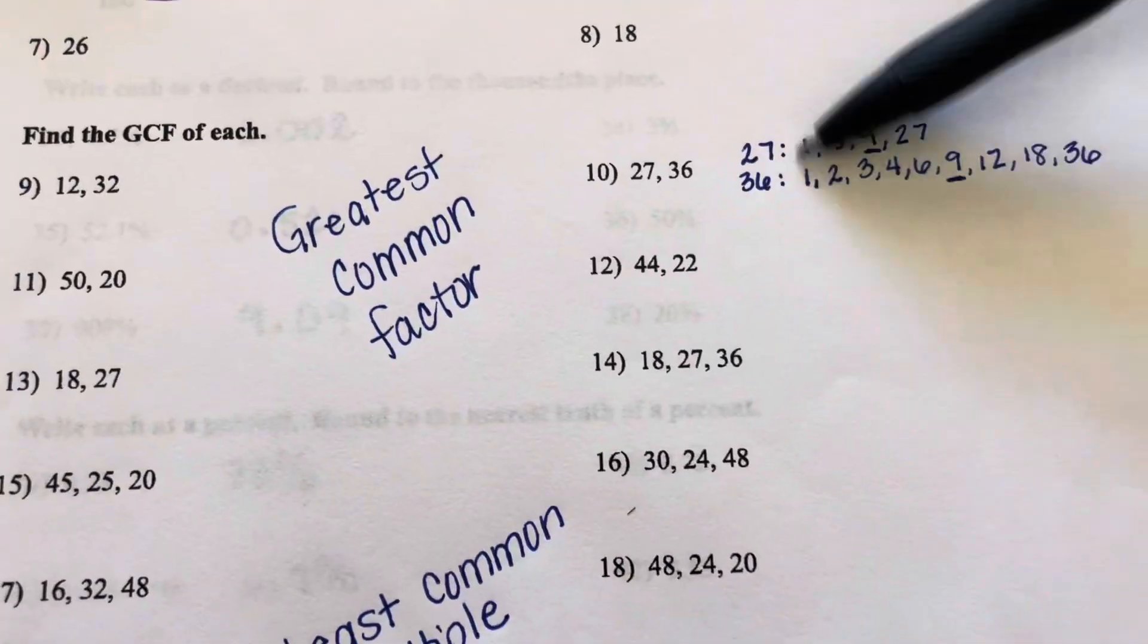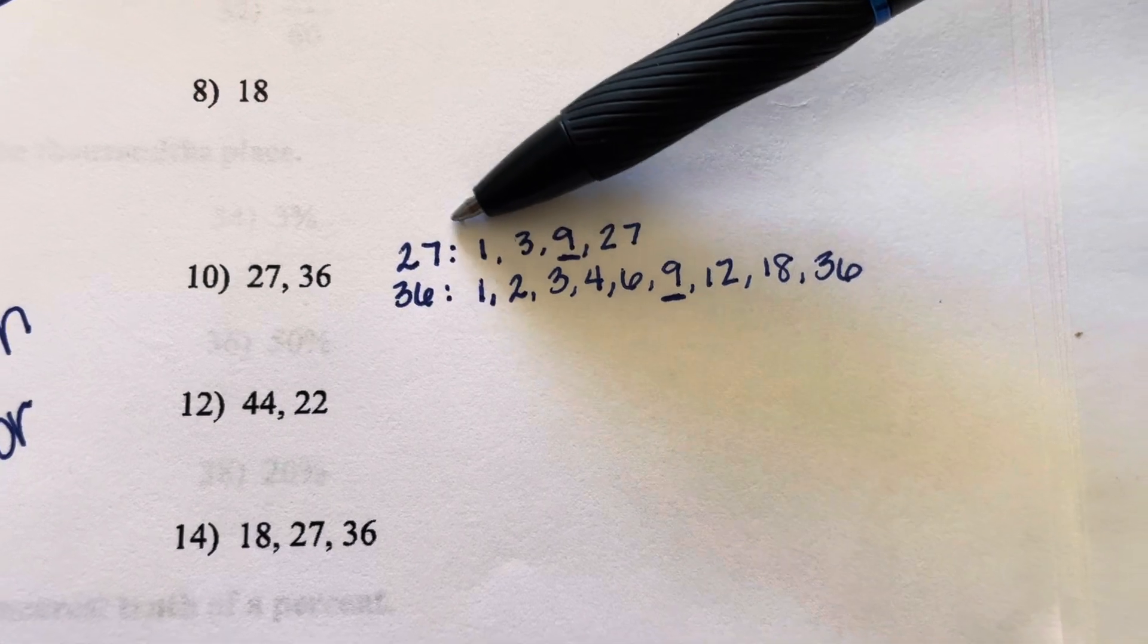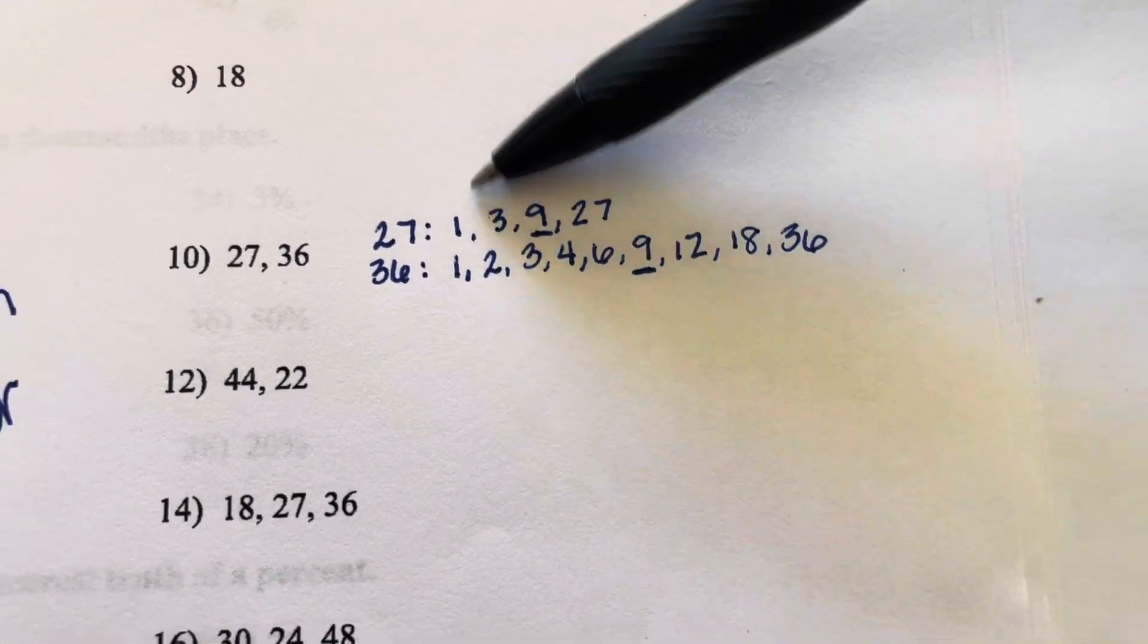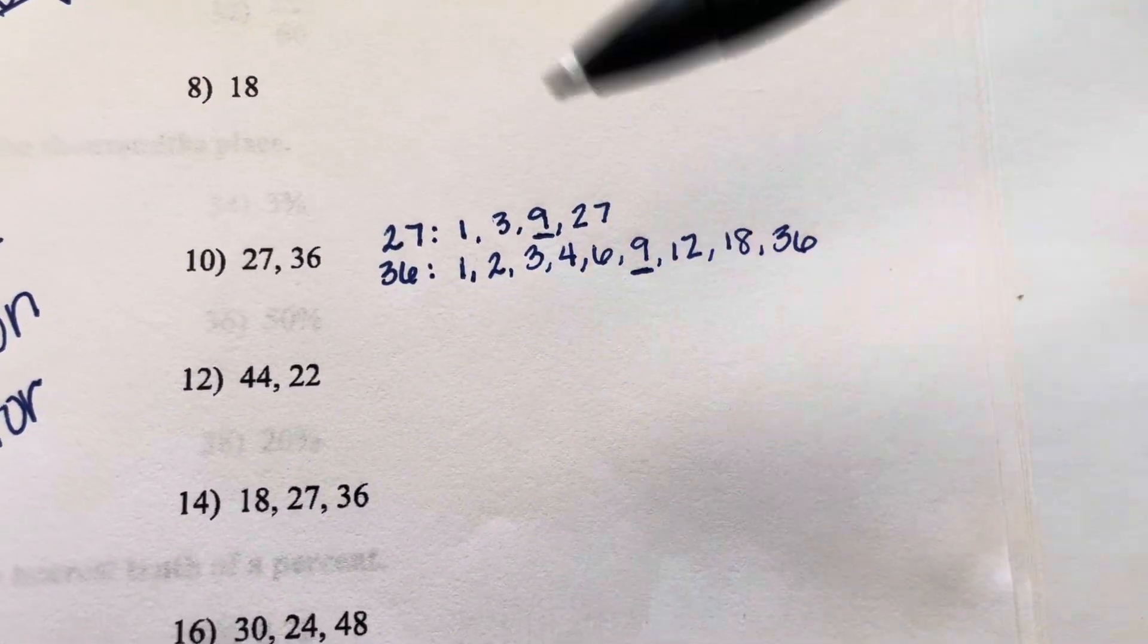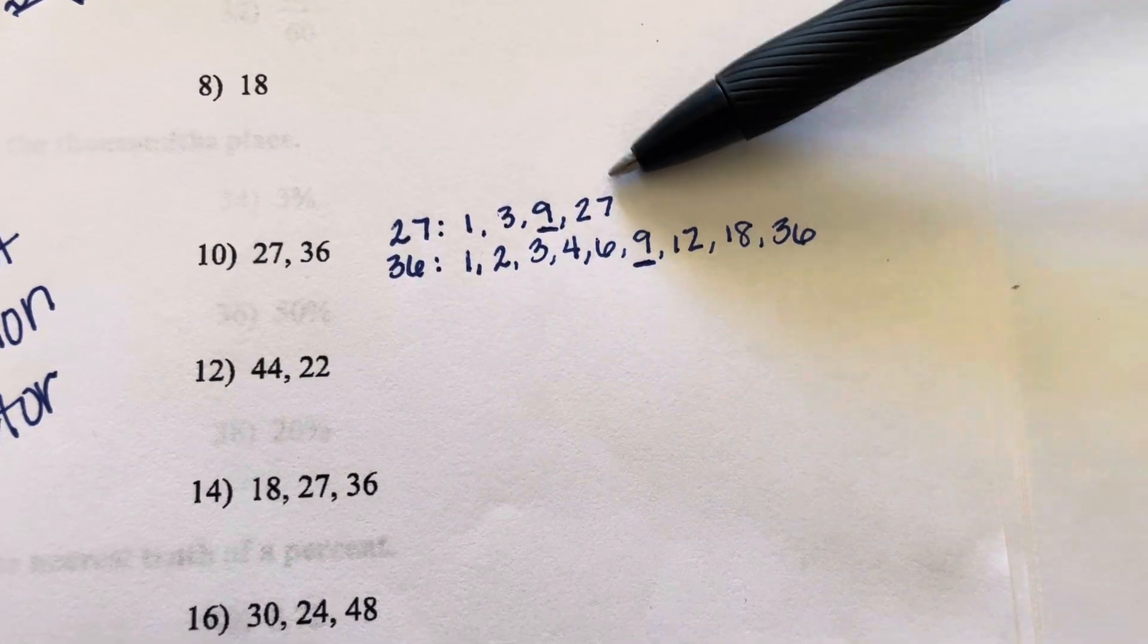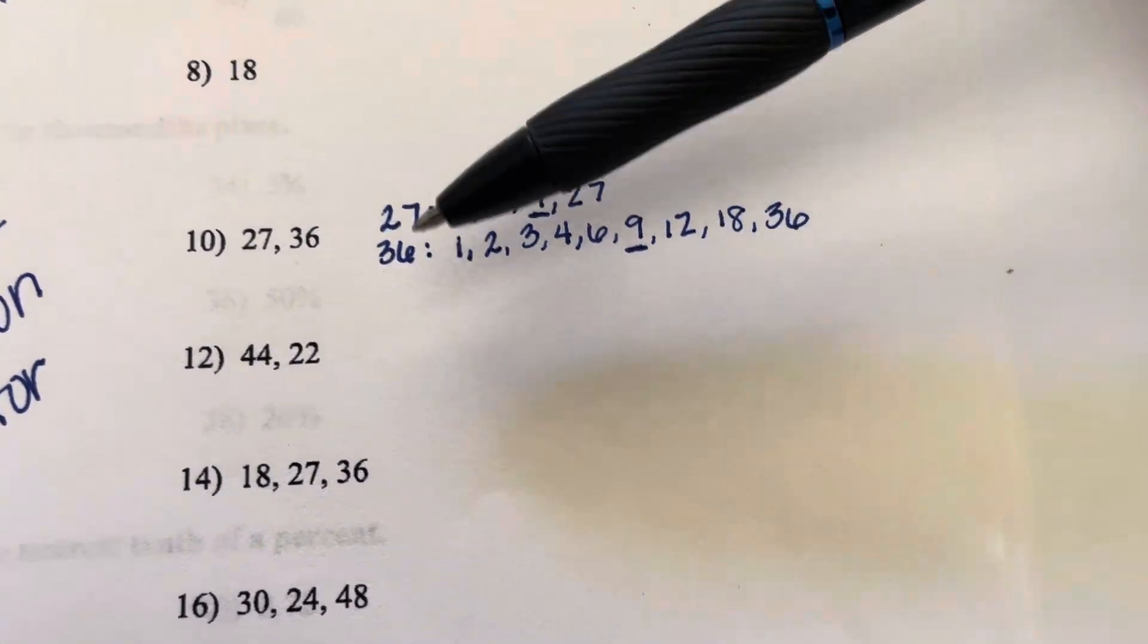For example, I go to 27 and I write the factors of 27. 1, 3, 9, 27. Those are all the factors that belong to 27.